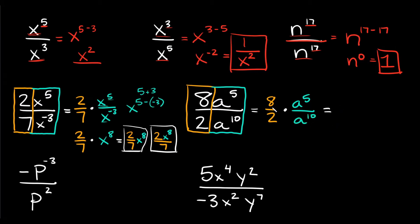So we can reduce this a little bit. 8 over 2 — or 8 divided by 2 — that reduces down to just 4. And then we're going to multiply that by our fraction: a to the 5th over a to the 10th. Following our rules, we have the same base — an a and an a — so just keep the a and then subtract the exponents, starting with the top one. So on top we have the 5, so 5 minus the bottom one, 10. And 5 minus 10 is negative 5, so this is going to be a to the negative 5th power.